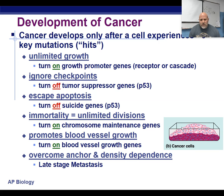The first mutation usually is what we talked about — permanent growth. And then the next mutation usually is ignoring the checkpoints. That also allows the cell to escape apoptosis, so it doesn't ever kill itself if things are bad. And then eventually you have some other mutations that will immortalize the cell and allow the cell to increase blood vessel growth, so the tumor gets fed more oxygen and sugar.